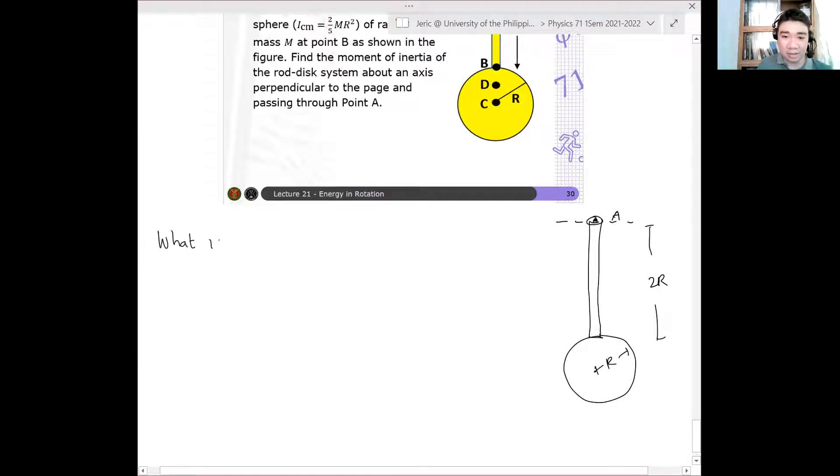Okay, the question now is, what is the moment of inertia about point A? Given that ICM for the sphere is 2/5 MR², so it's a uniform solid sphere, and ICM for a rod is 1/12 ML². So how do you determine the moment of inertia of this system about point A? So IA is simply the sum: I sphere plus I rod, where I sphere here is the moment of inertia of the sphere relative to point A, and I rod is the moment of inertia of the rod relative to A.